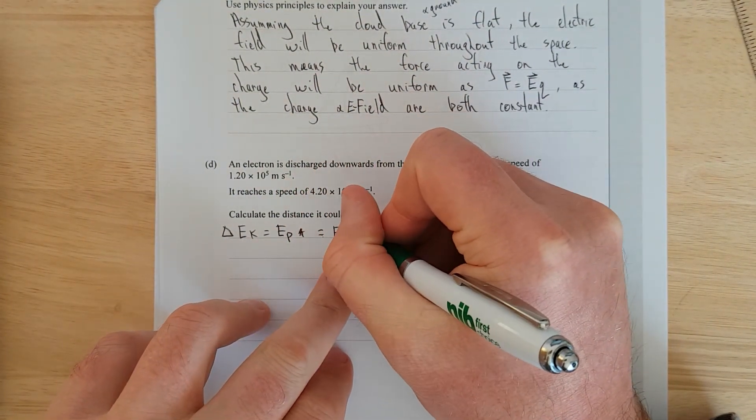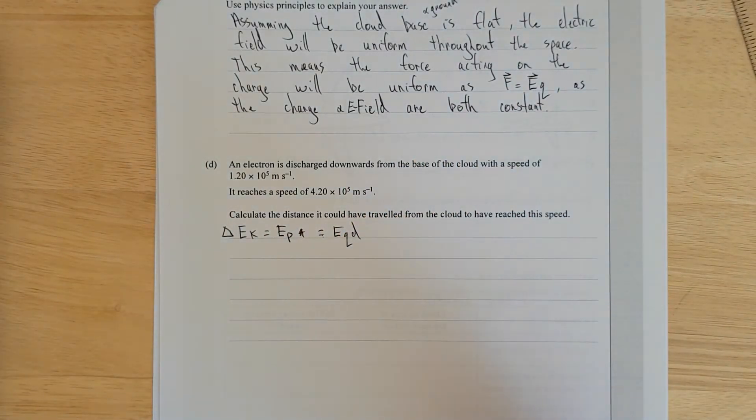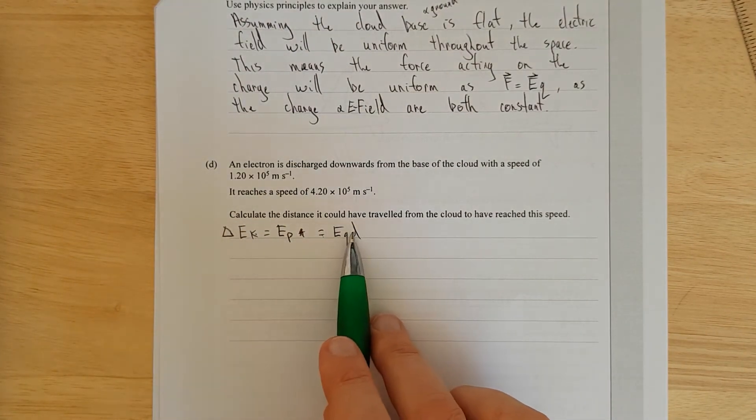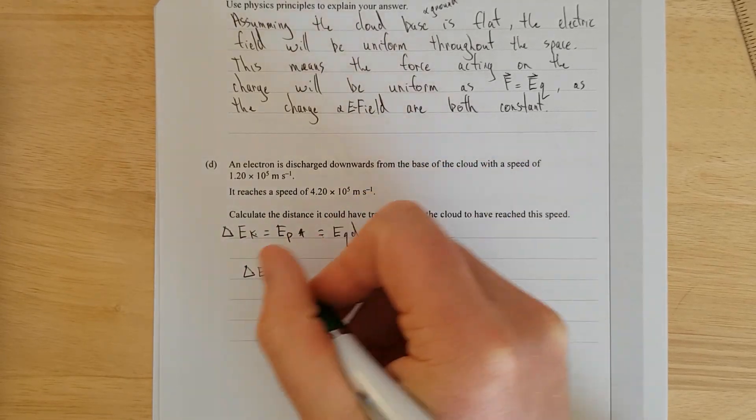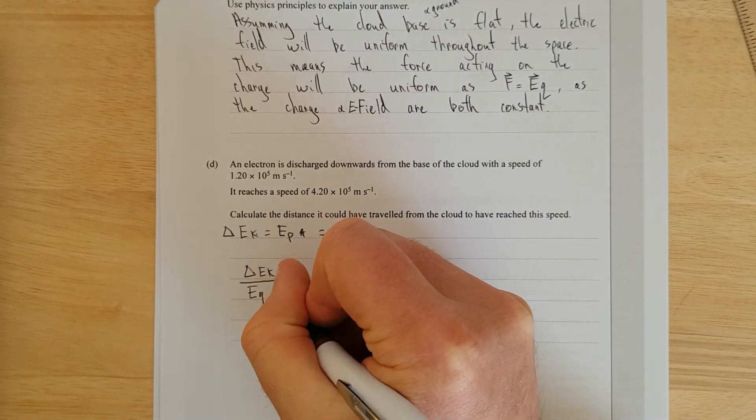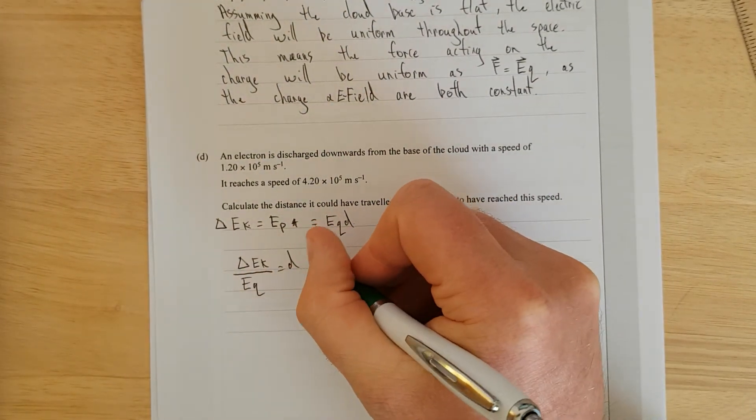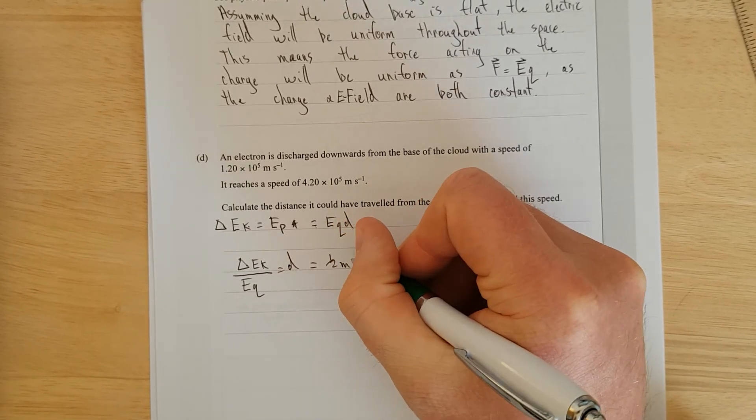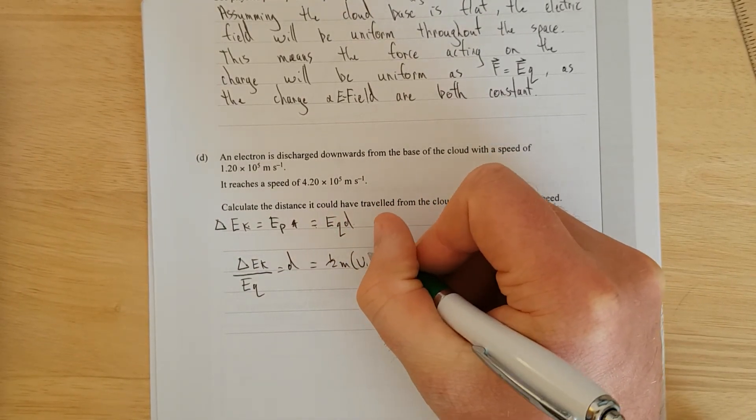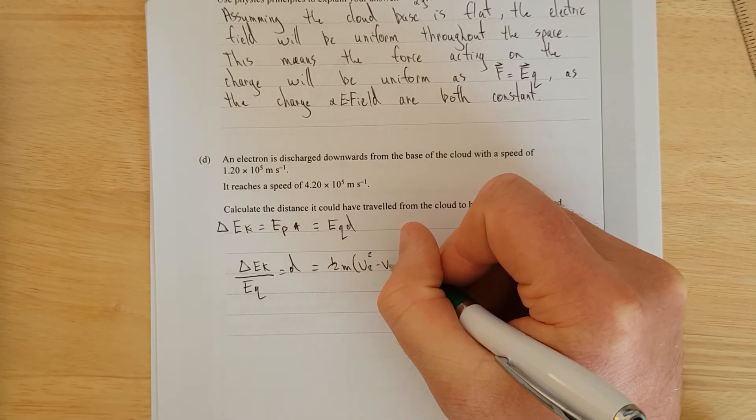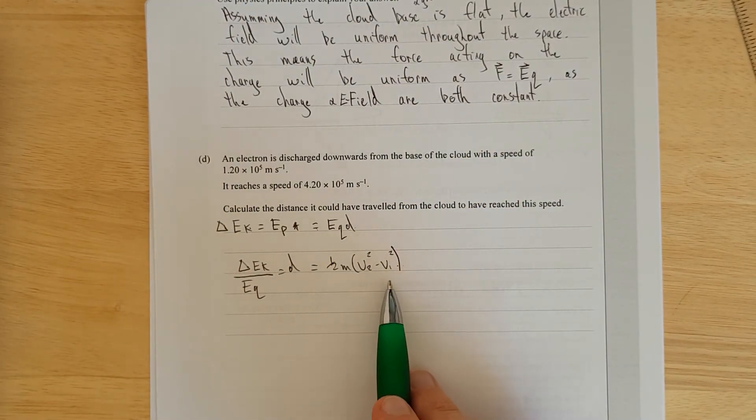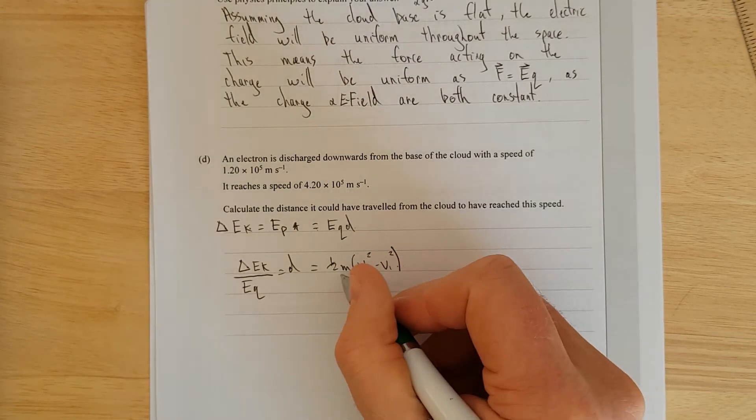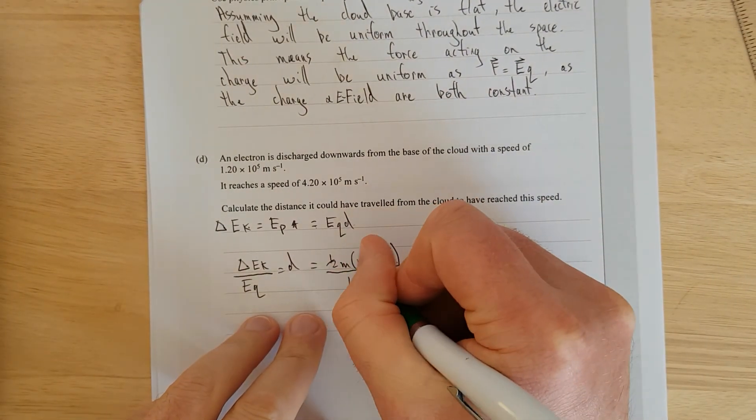In other words, this is going to be equal to EQD. We know what the change in potential energy is. We're going to rearrange for D, so we're going to have change in EK divided by EQ equals D. That is going to be equal to half M times V2 squared minus V1 squared. Because if you expanded this out, it's the final energy minus the initial energy. That's the change in energy divided by the electric field times the charge.